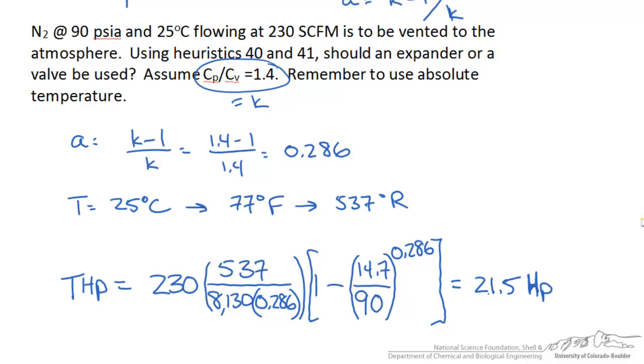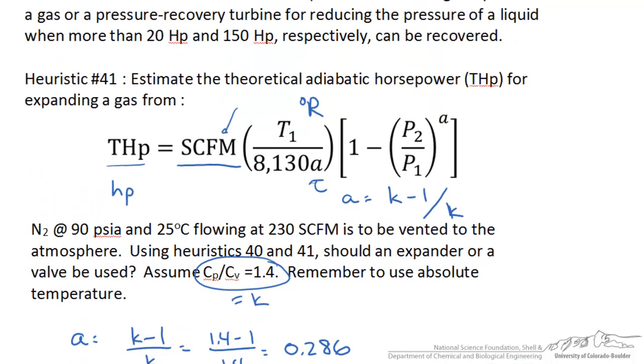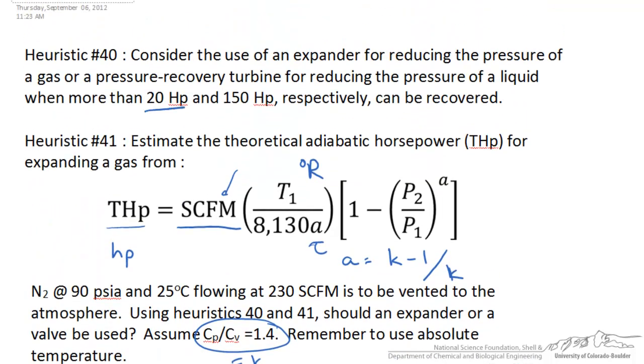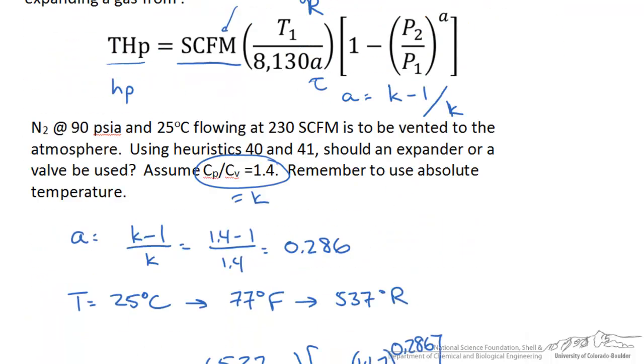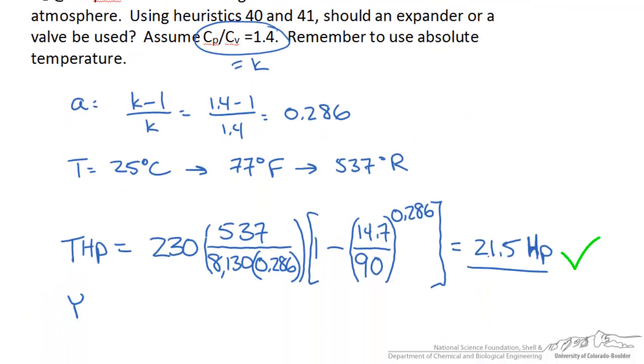So what does this mean? Well, we are working with gases, so let's look at our heuristic. If we can recover more than the theoretical load of 20 horsepower, then we should use or consider using an expander. Since we are at 21.5, then yes, consider using an expander to recover this energy. Remember, this is for gases only.